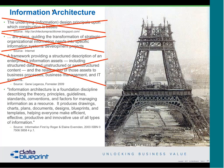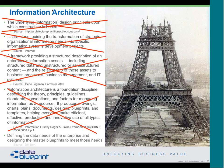Roger and Elaine Evenden's book Information First is wonderful, but their definition — 'information architecture is a foundation discipline describing theory, principles, guidelines, standards, conventions, and factors for managing information as a resource, producing documents, designs, blueprints, and templates to make everybody effective, efficient, productive, and innovative' — can you imagine saying that in an elevator? Even our DIMBOK definition of 'defining the data needs of the enterprise and designing master blueprints' — if the boss says 'what's going on,' and you say 'I'm developing a common language for all our systems and our people to speak,' they get that.